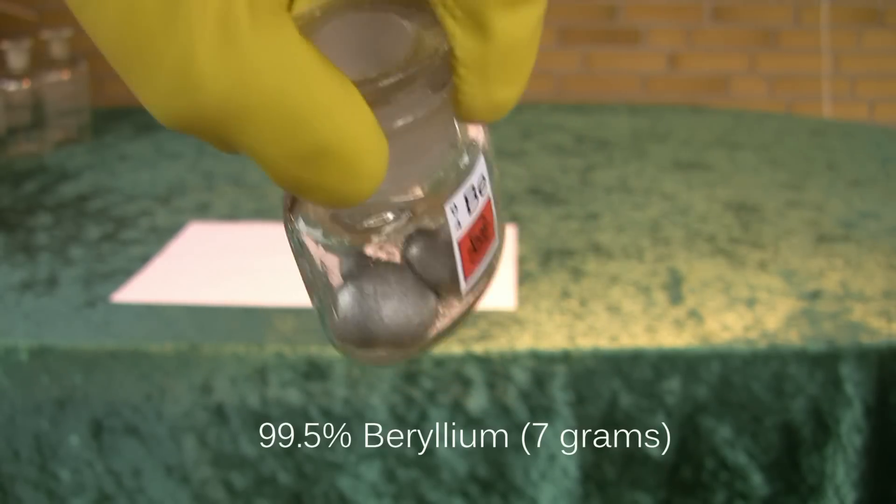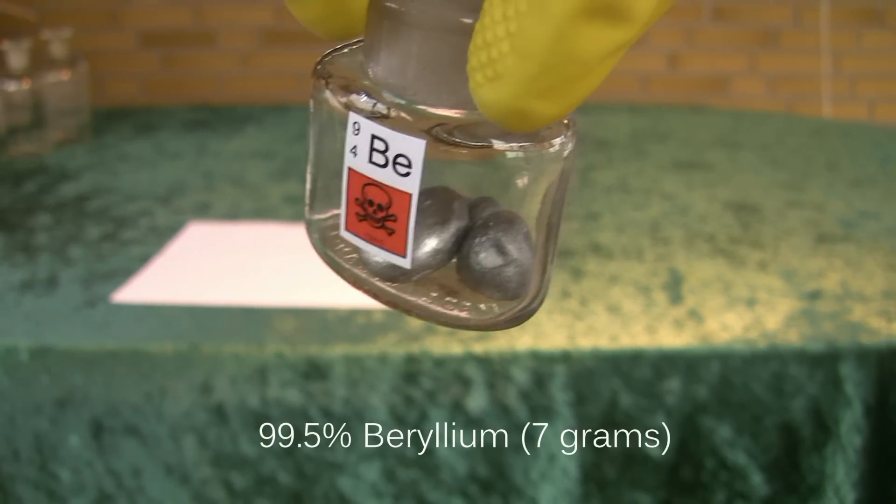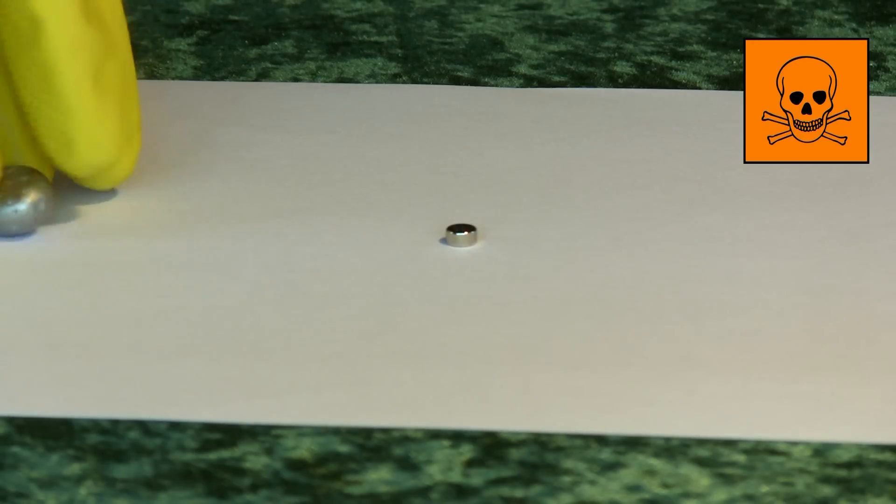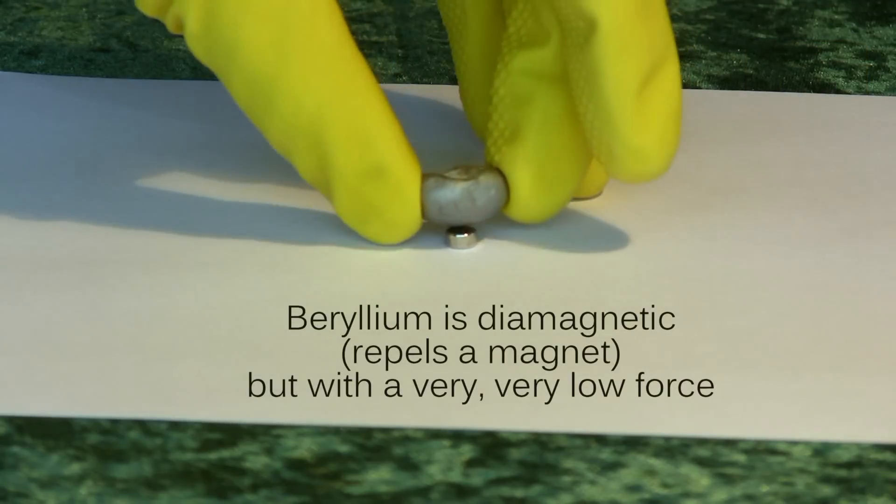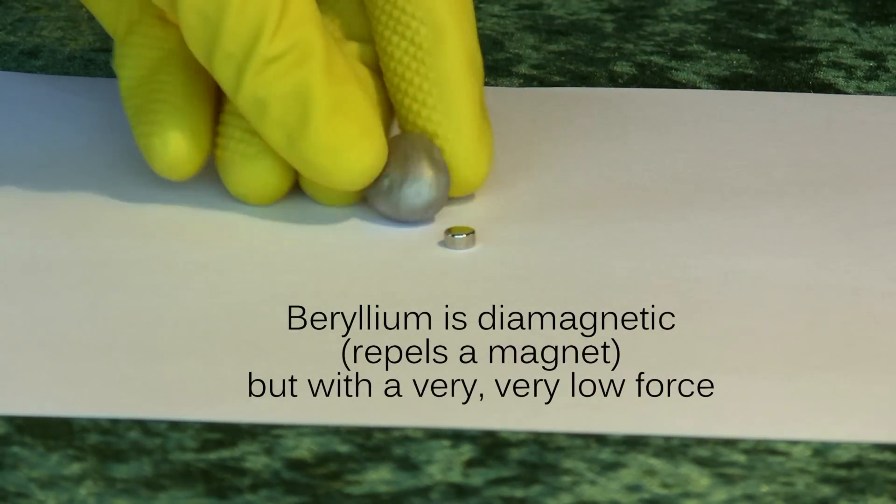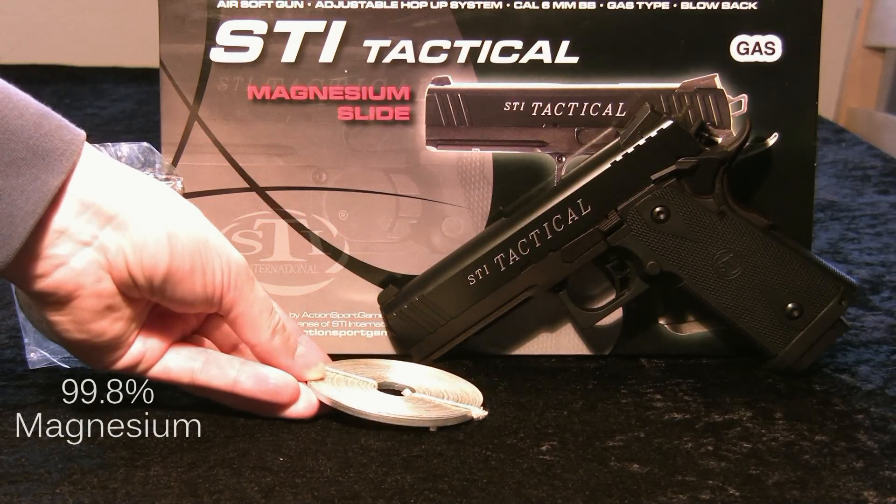Beryllium in dust form is among the most poisonous non-radioactive elements. And magnesium will burn extremely hot and bright.